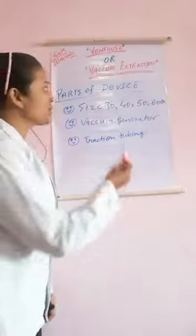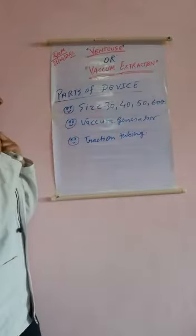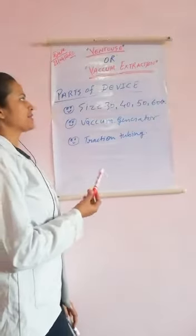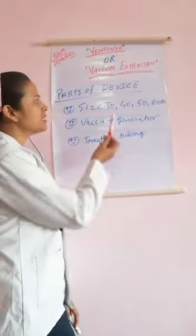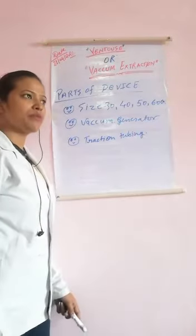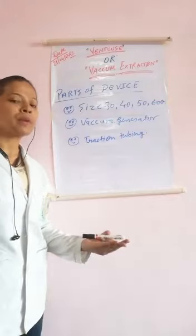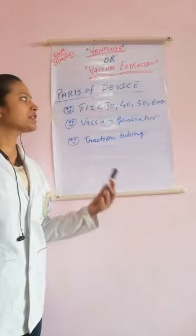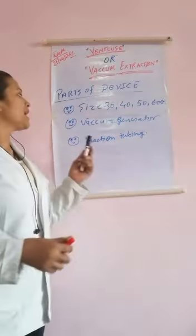Next we will see the parts of the device. For sizes, there are different sizes available of the vacuum cup or vacuum extractor. There are different sizes: 30, 40, 50, 60 centimeter depending on the gestational week of the fetus or mother. In preterm baby, vacuum extractor is contraindicated, but 30, 40, 50 size depends on the fetus weight.